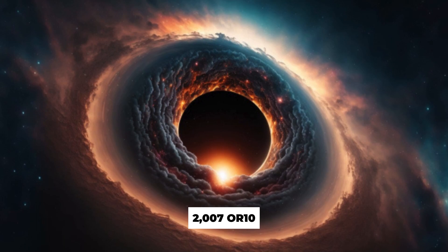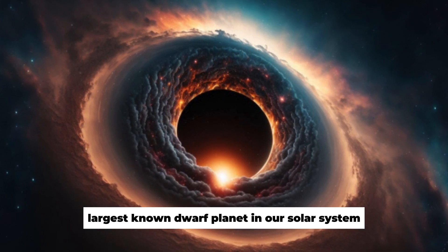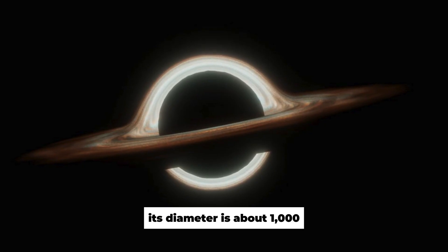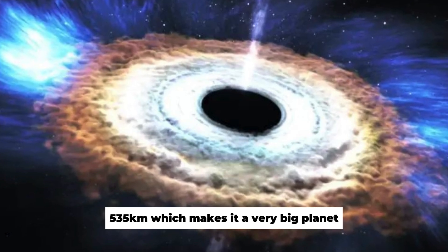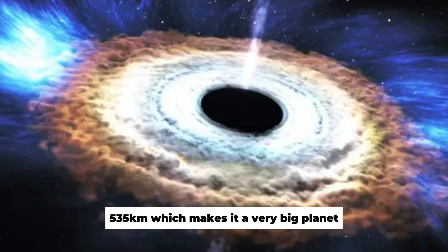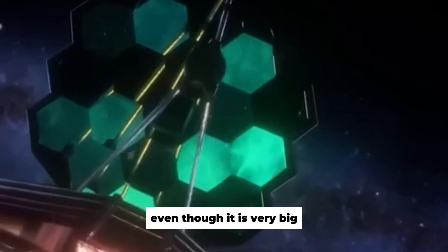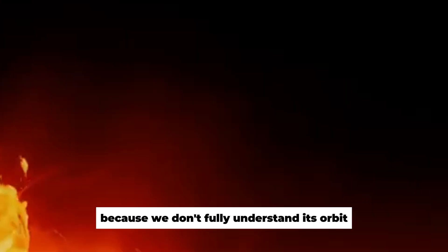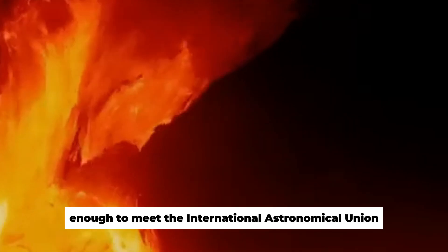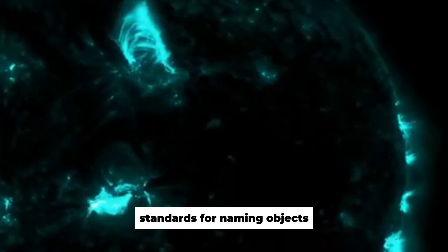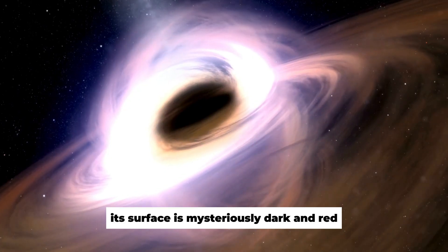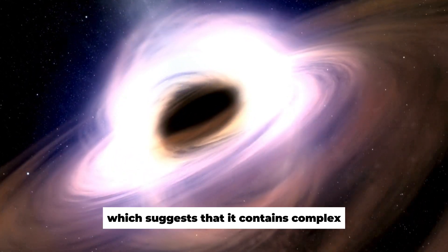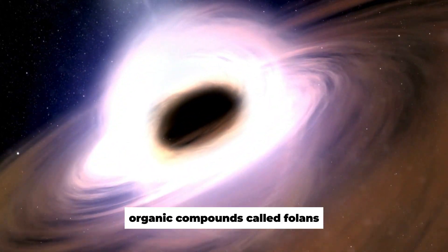2007 OR10 is the third largest known dwarf planet in our solar system. Its diameter is about 1,535 kilometers, which makes it a very big planet. Even though it is very big, it doesn't have a name yet because we don't fully understand its orbit and haven't been able to figure it out enough to meet the International Astronomical Union standards for naming objects. Its surface is mysteriously dark and red, which suggests that it contains complex organic compounds called tholins.